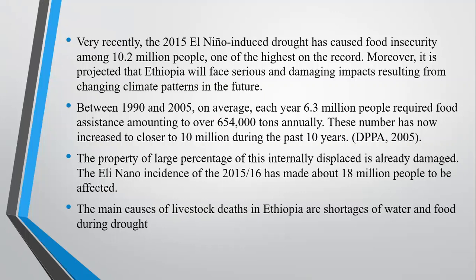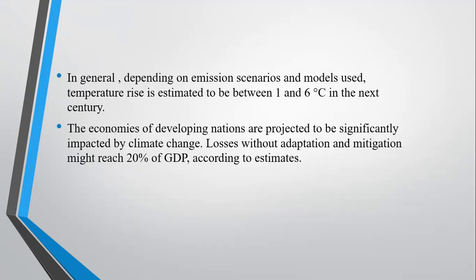Between the 1990s and 2005, an average of 6.3 million people per year required food assistance, amounting to over 654,000 tons annually. The number has now increased to closer to 10 million during the past 10 years. The main causes of livestock and agricultural damage in Ethiopia are water and food shortages during droughts. Depending on emission scenarios and models used, temperature rise is estimated to be between 1 and 6 degrees Celsius in the next century. The economies of developing nations are projected to be significantly impacted by climate change, with losses without adaptation and mitigation potentially reaching 20% of GDP.